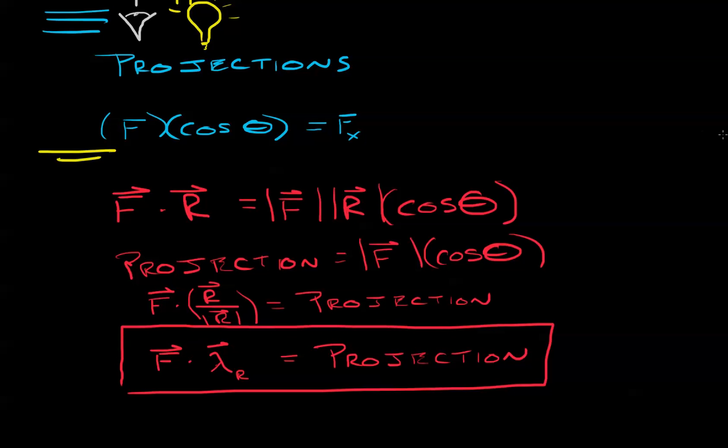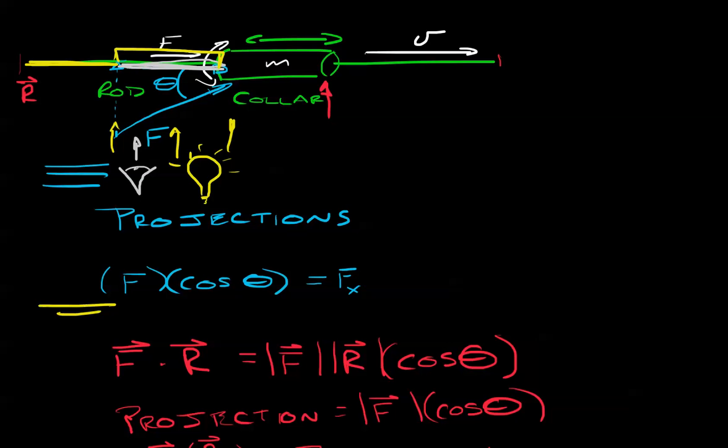What this means is if we take the force as a vector and we take the dot product times the unit vector, we will find out how much of that force is projected onto this space equals projection. So let's try it up here. Well, let's go ahead and try it. Let's just say that theta is 30 degrees.